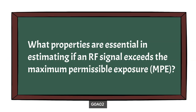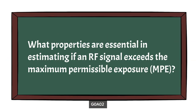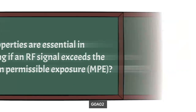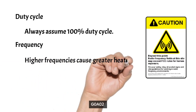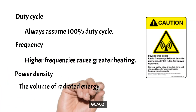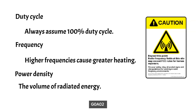For safety, we need to ask: what properties are essential in estimating if an RF signal exceeds the maximum permissible exposure, or MPE? Three things determine MPE. One is duty cycle, the other is frequency, and the last is power density. We should always assume a 100% duty cycle in our calculations. The higher the frequency, the greater the heating. And power density refers to the volume being radiated. For example, a 1200 watt microwave oven will cook faster than an 800 watt oven.